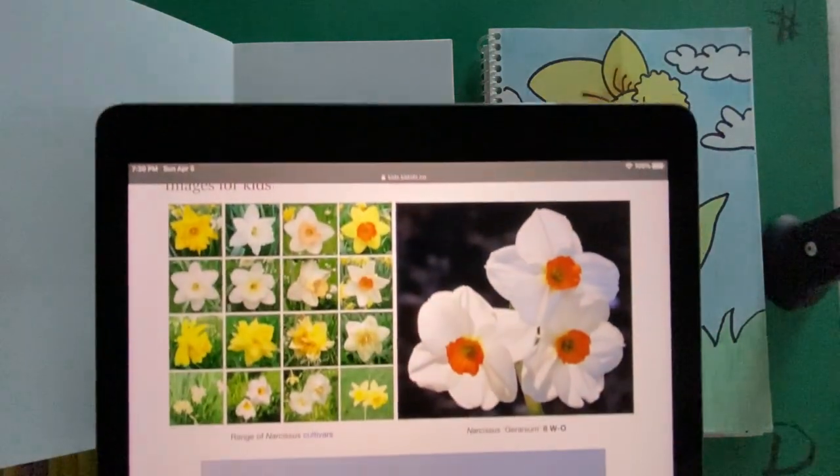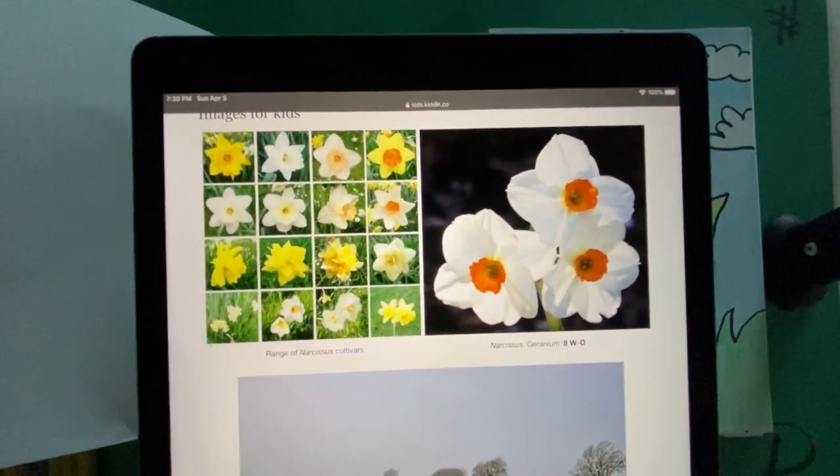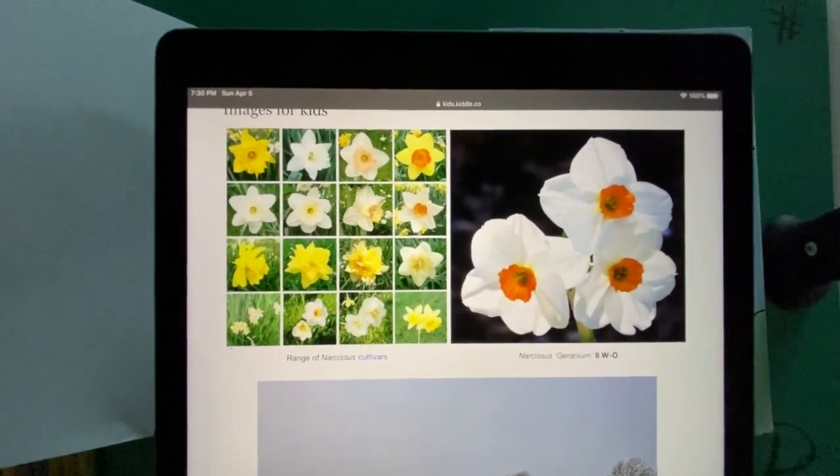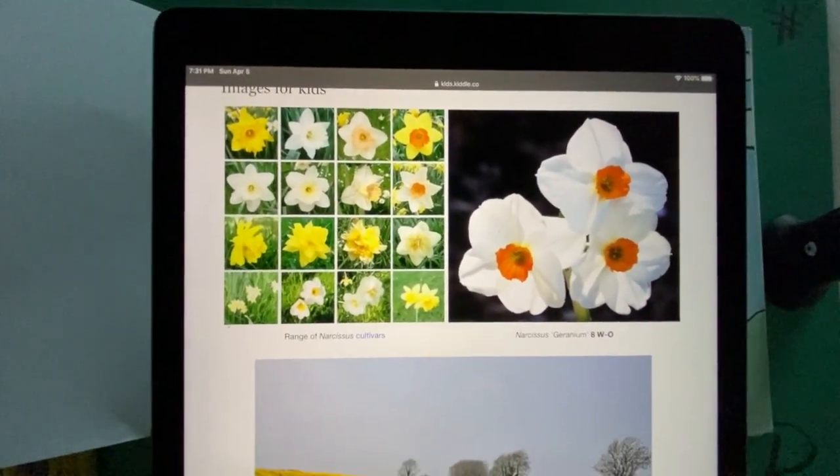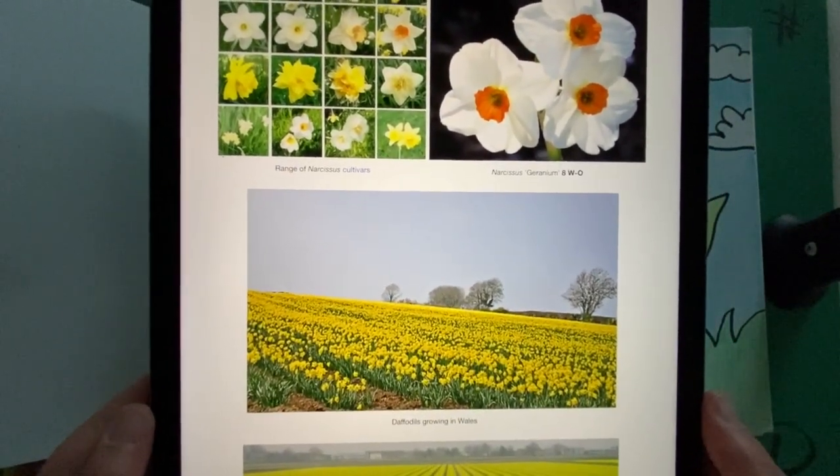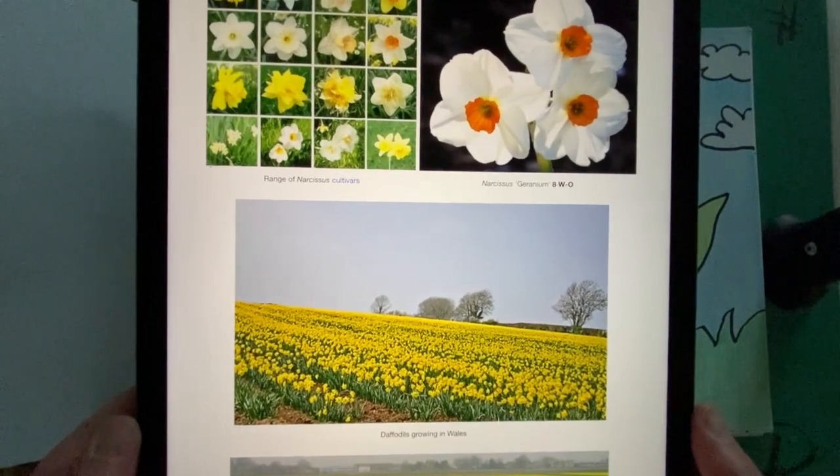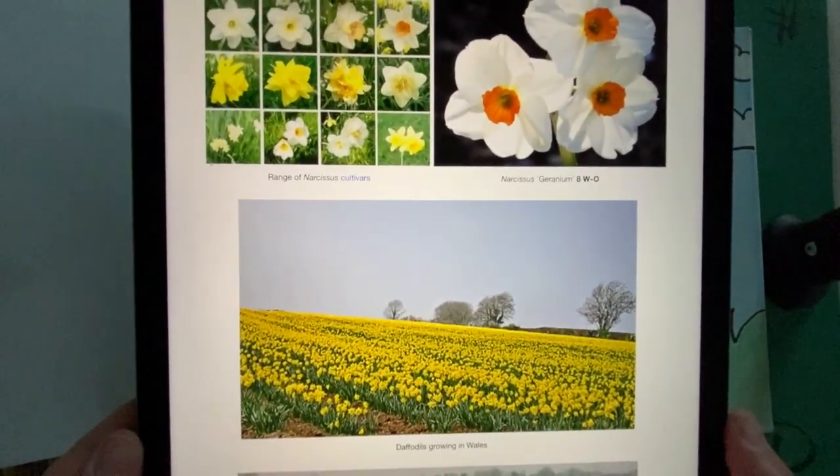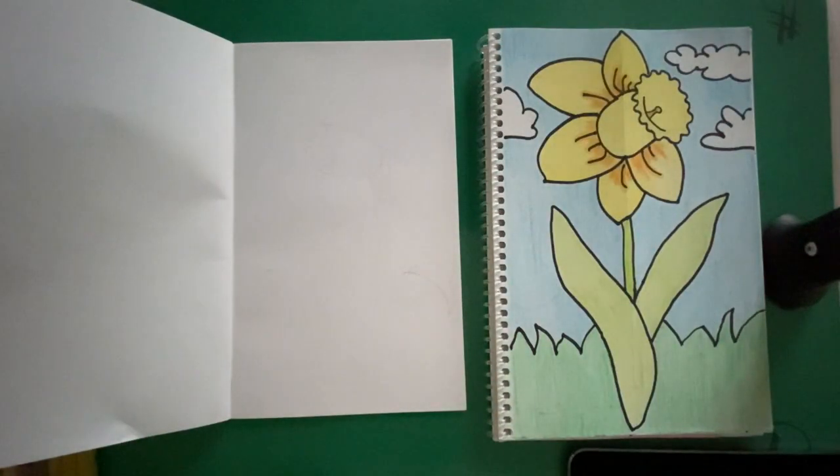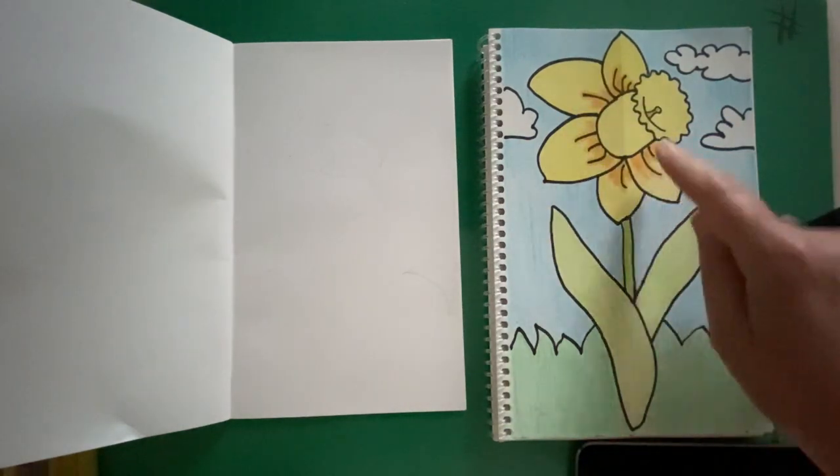Daffodils, I'm going to give you some fun facts about daffodils. Daffodils are a perennial. That means that they flower every year in the spring. So there's some different flowers and there's a field of daffodils right there growing in Wales. Now they flower every year in the spring. And the flowers have six petals around a cup or bell-shaped center.